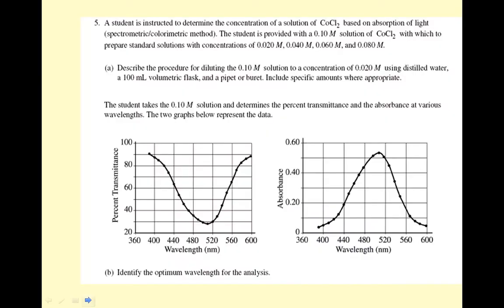A student is instructed to determine the concentration of a solution of CoCl2 based on the absorption of light (spectrometric, colorimetric method). The student is provided with a 0.1 molar solution of cobalt 2 chloride with which to prepare standard solutions with concentrations of 0.02, 0.04, 0.06, 0.08. This is your lab, basically. Describe the procedure for diluting 0.1 molar solution to a concentration of 0.02 using distilled water, 100 milliliter volumetric flask, and a pipette or burette. Include specific amounts where appropriate.